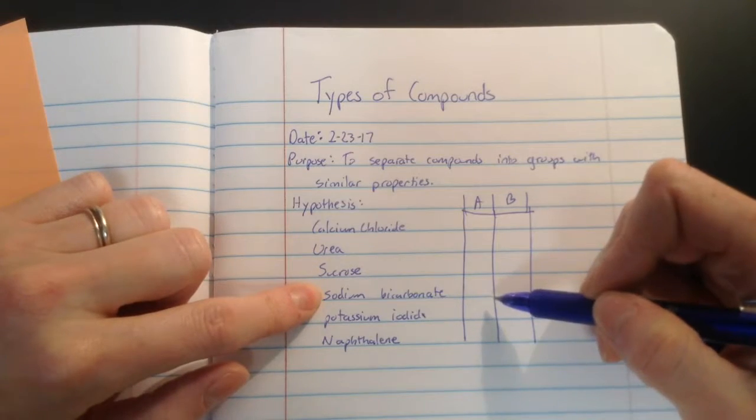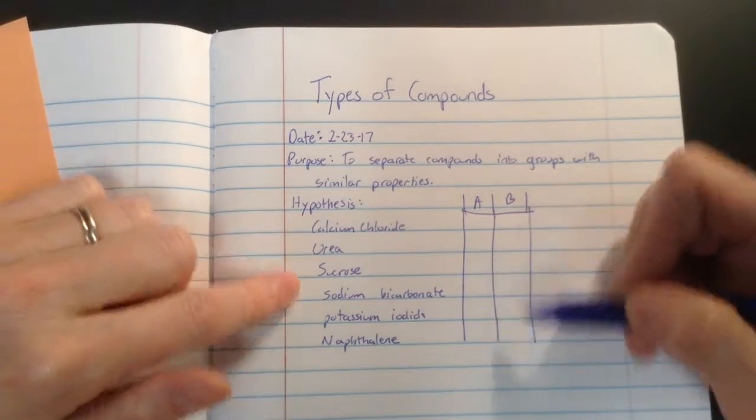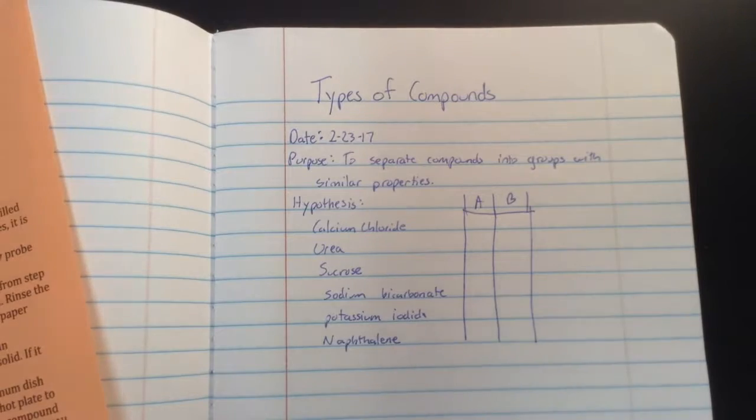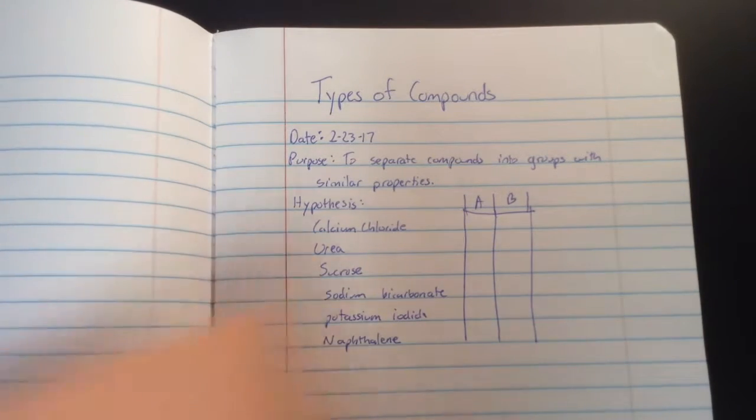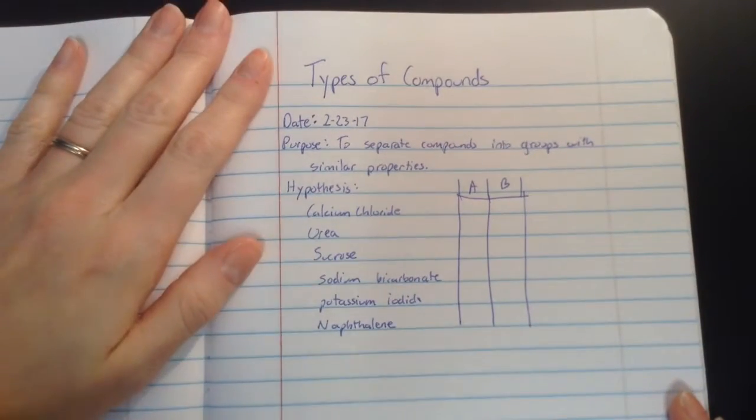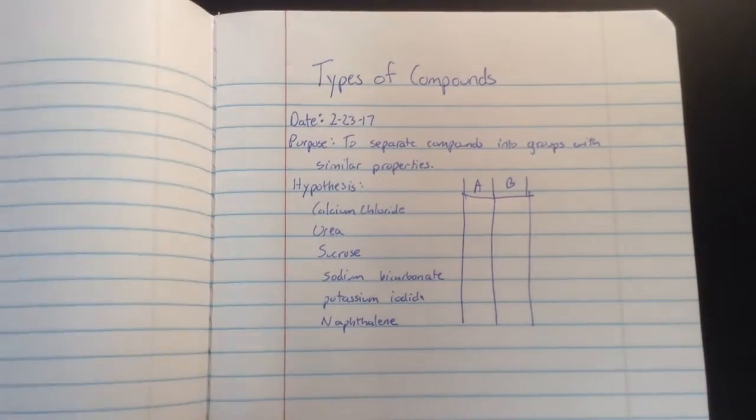Should it be by itself? But we want two groups. We should have two groups of compounds here based on their properties. So take a minute, decide how you want to group them together into two different groups, and then we'll move on from there.